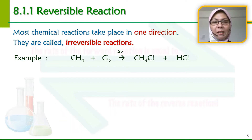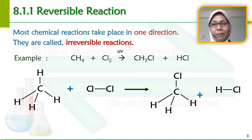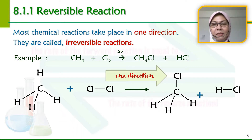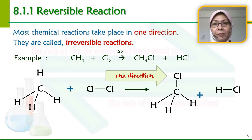Contohnya, cuba perhatikan tindak balas diantara CH4, methane dengan klorin, untuk menghasilkan kloromethane dan HCl. Methane bertindak balas dengan Cl2 menjadi produk dia. Dan tindak balas ini hanya berlaku sehala saja — one direction.